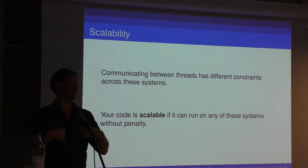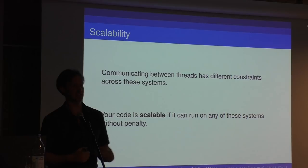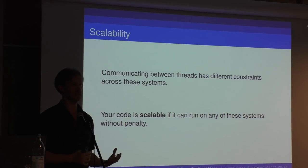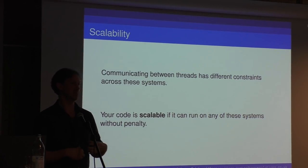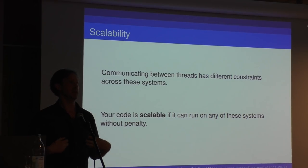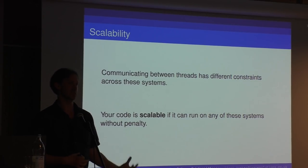Your code is scalable if you can design it so that it runs nicely across a wide range of these systems — so that as you get more cores and more CPUs, because your customers upgrade their systems, or if you're shipping libraries, then your code scales the performance with the system and you don't end up with big bottlenecks.